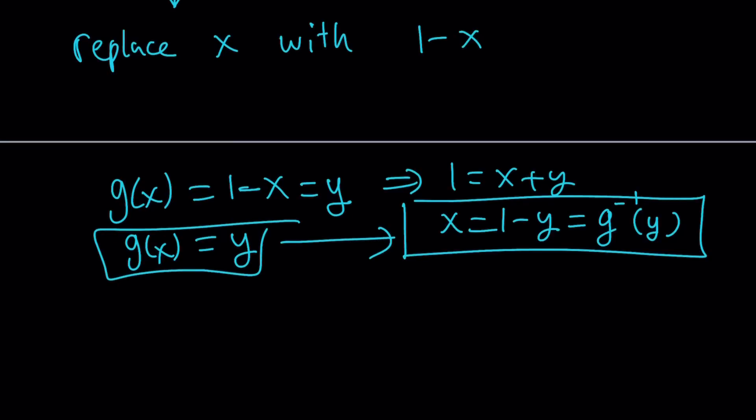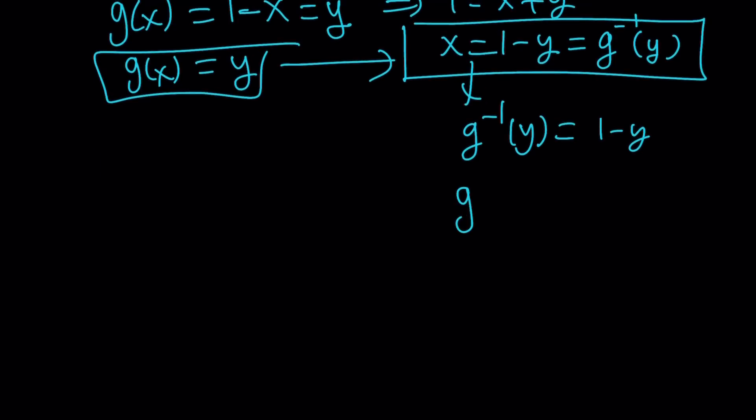So this is g inverse of y. I want to get g inverse of x, so let me rewrite it: g inverse of y equals 1-y. Since I need an expression for g inverse of x, just replace y with x. You can keep doing this, doesn't matter, because you can always replace a variable with another variable.